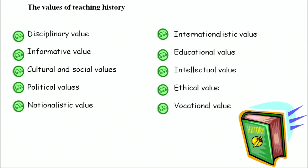Nationalistic value helps children maintain nationalism and patriotism and develop a sense of belongingness towards their nation. Internationalistic value provides children a sense of global citizenship, brotherhood, and a feeling of interrelationship with other countries and continents. Educational value provides insight about development and the past, giving students a chance to learn about history, society, and their interaction through education.